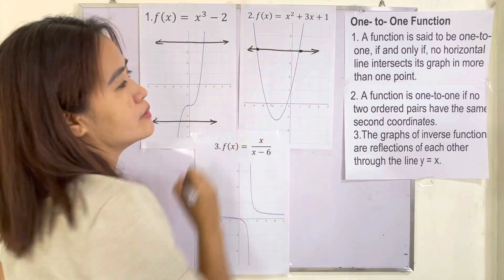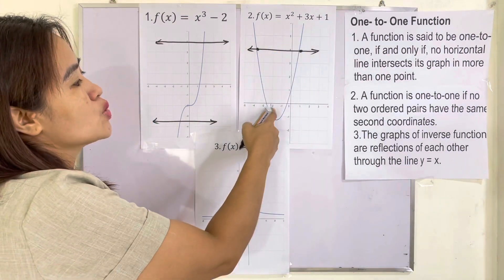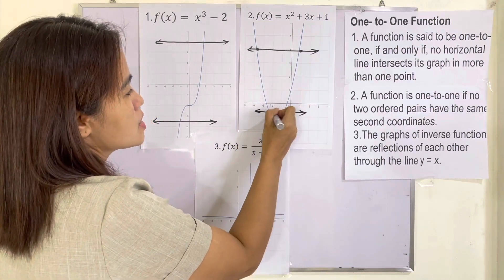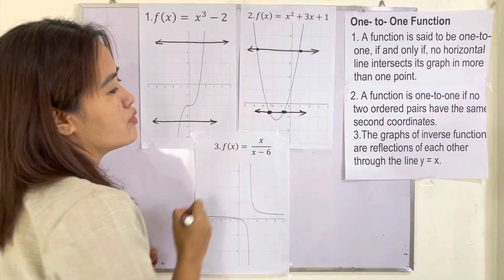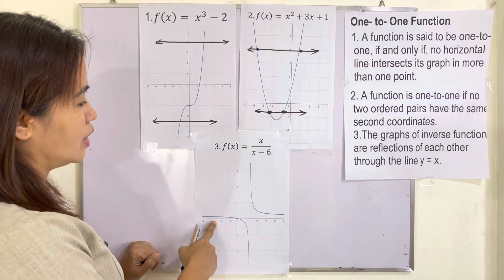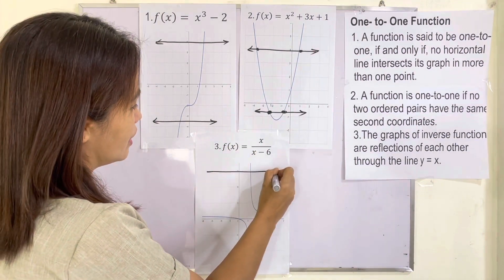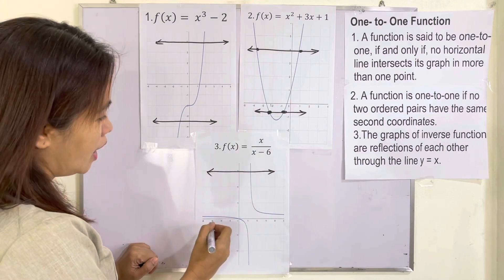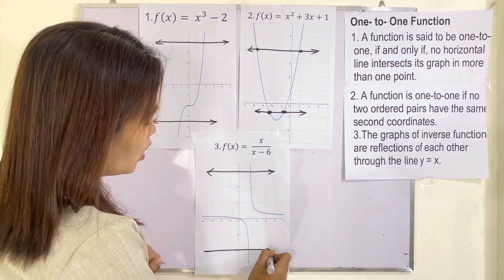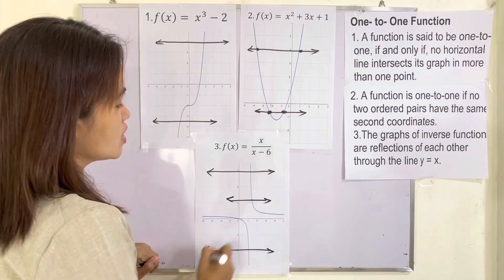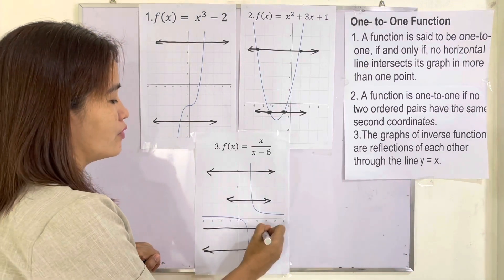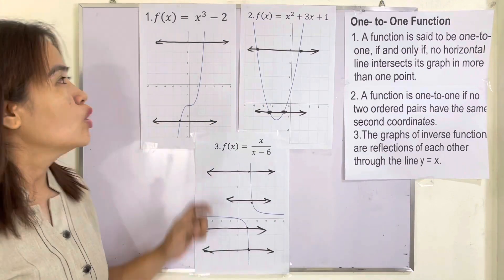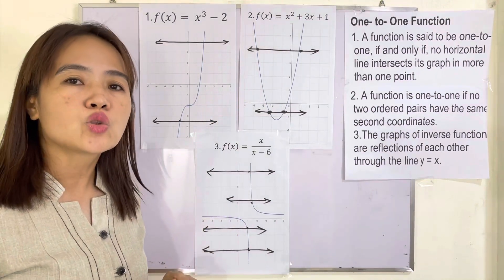You can draw this horizontal line anywhere you want. In number two, if I draw it here, it intersects the graph at two points, so definitely this is not a one-to-one function. In number three, if I draw a horizontal line, it intersects the graph at only one point — one point, one point, everywhere. So number one and number three are one-to-one functions.